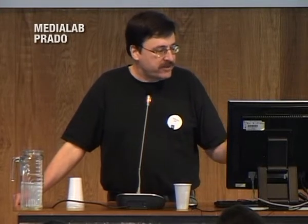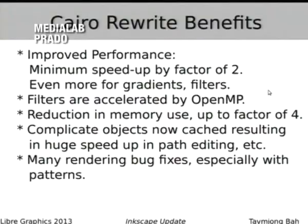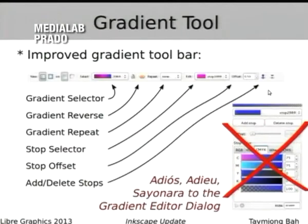The benefits: it increases the speed of Inkscape by at least a factor of two, and even more if you use lots of gradients and filters. The filters are accelerated by OpenMP. There's a reduction in memory use of up to a factor of four. Complicated objects are now cached, which also speeds things up quite a bit, and there are a lot of rendering bug fixes, especially in patterns.